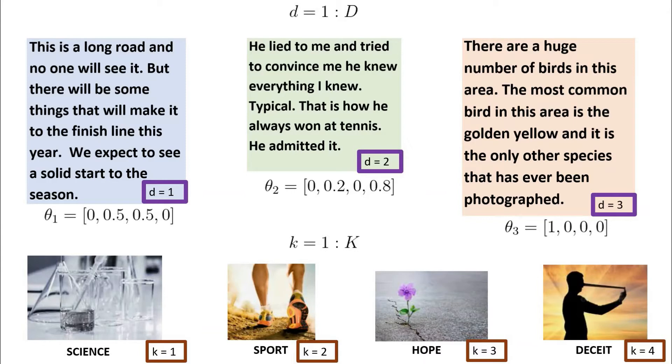If we want to define these theta vectors in a concise mathematical notation, we can say each theta_d is like a random variable that we eventually want to learn, drawn from some Dirichlet distribution.